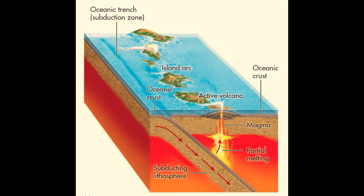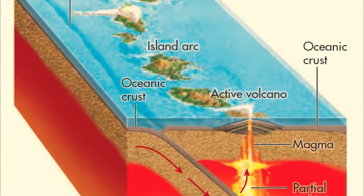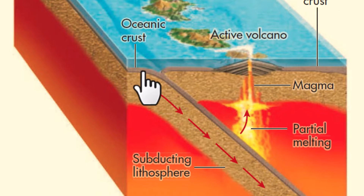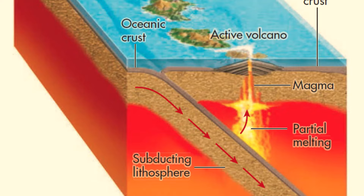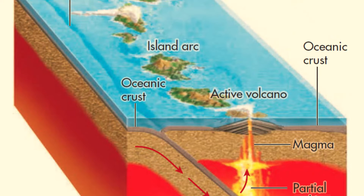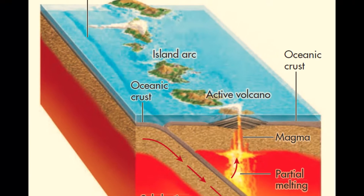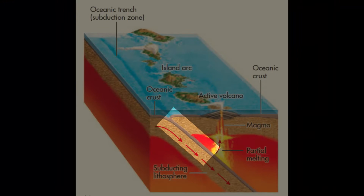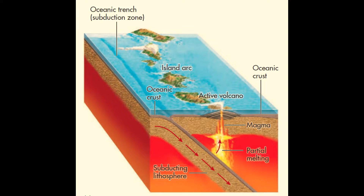Convergence of two oceanic plates forms an ocean-ocean convergent boundary. One plate bends and slides beneath the other plate along an inclined zone. The process of one plate sliding beneath another is called subduction, and the zone around the downward-moving plate is a subduction zone. Many large earthquakes occur in subduction zones.